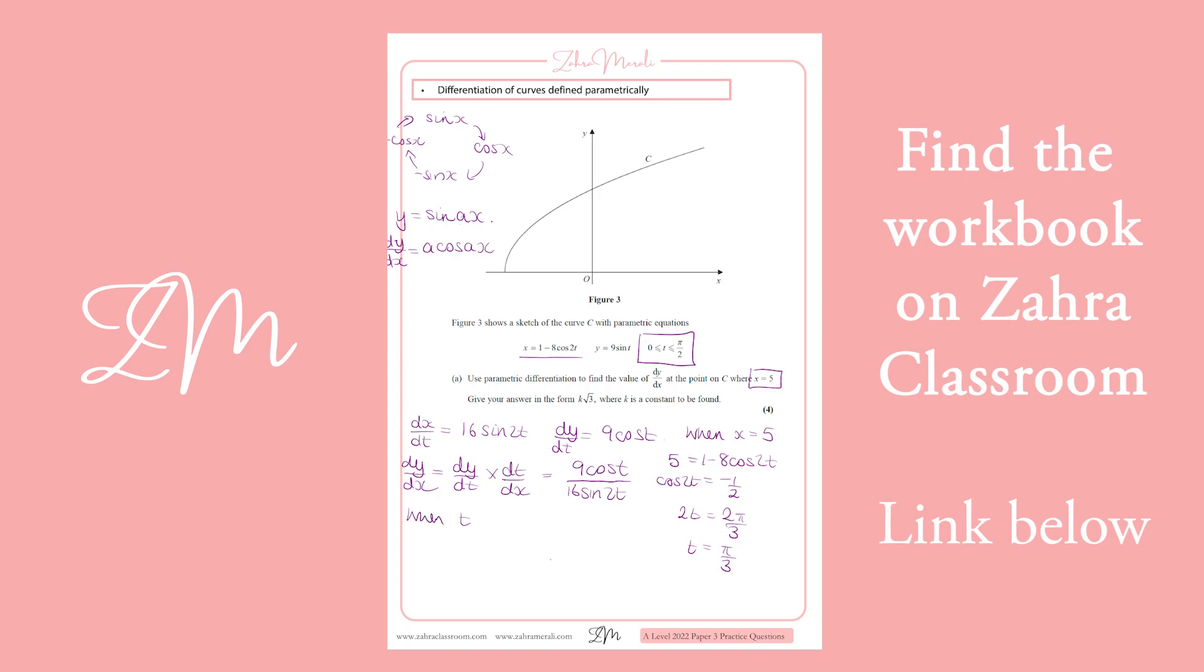Now we substitute that in. When t equals pi by 3, and when they're asking for an exact value, sometimes if you type it all into your calculator in one go, it doesn't necessarily give you the right answer. So you probably need to do both bits separately. So on the top, you're going to get 9 over 2. And on the bottom, you're going to get 16. So you're going to get 16 times by root 3 over 2. So you're going to get 8 root 3, which is going to leave you with 3 over 16 root 3.